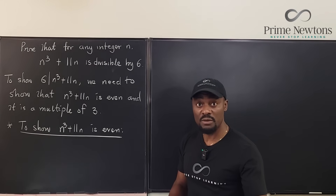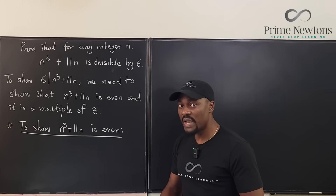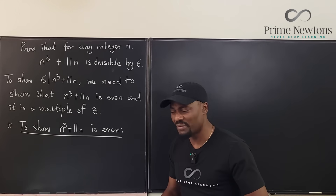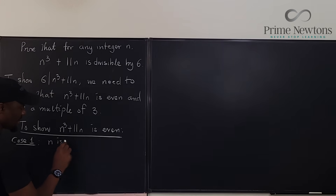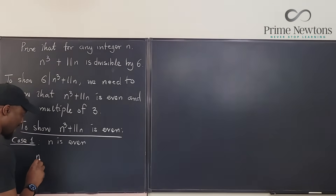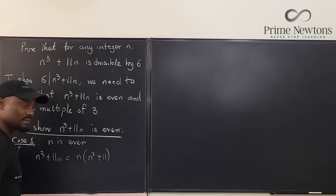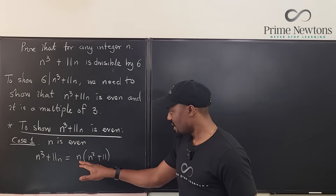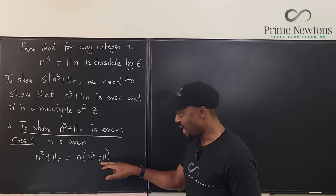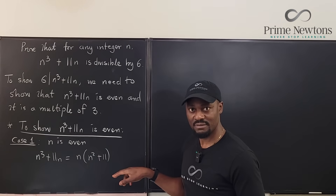To show the expression is always even, we do two cases. We can assume the integer is even, or it's odd. Case one: n is even. If n is even, I can factor and say n cubed plus 11n equals n times (n squared plus 11). If n is even, then it is an even number multiplying another number — whatever that number is, it doesn't matter. N is even, so the whole product is even.